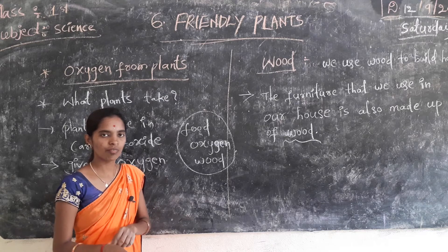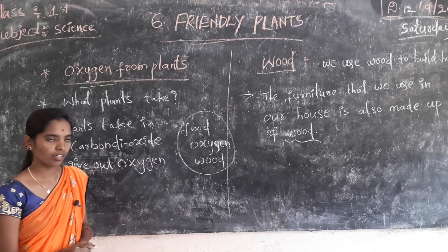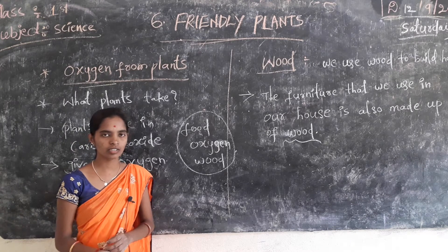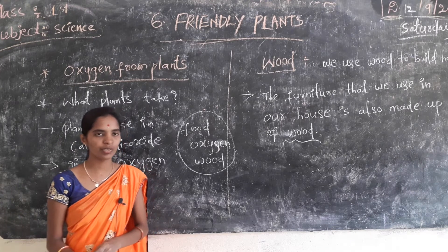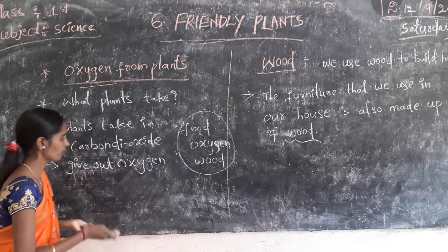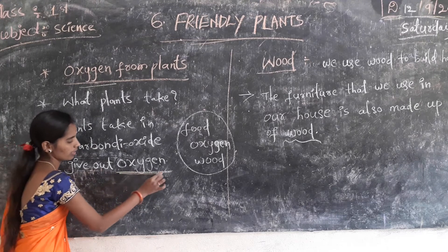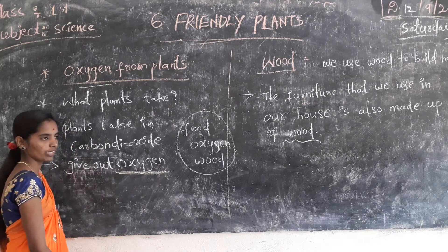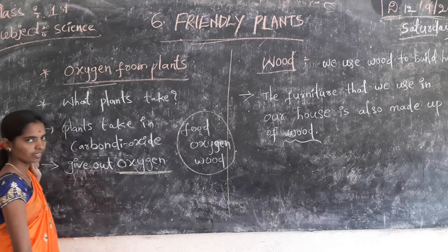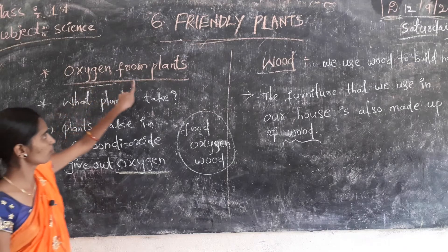We get oxygen from fresh and green plants. Plants give out oxygen and plants take in carbon dioxide. We need oxygen to breathe. So we get oxygen from plants.